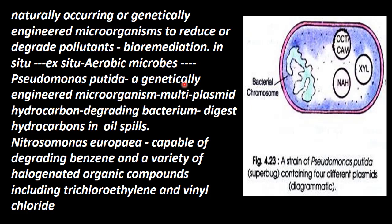It is a genetically engineered microorganism — a bacterium which eats the hydrocarbons in the oil spill. A strain of Pseudomonas putida, it is a superbug containing four different plasmids.